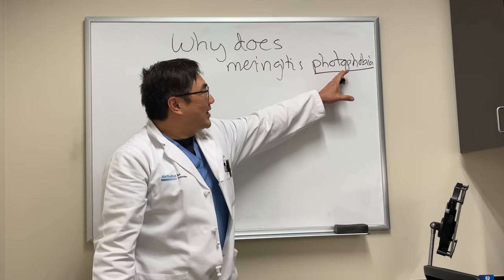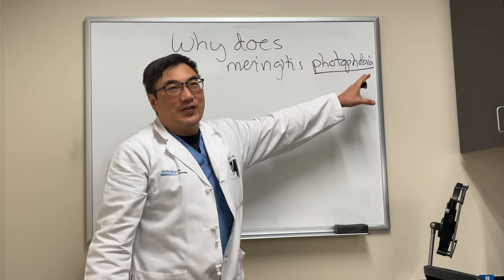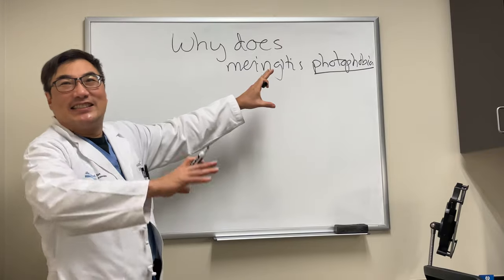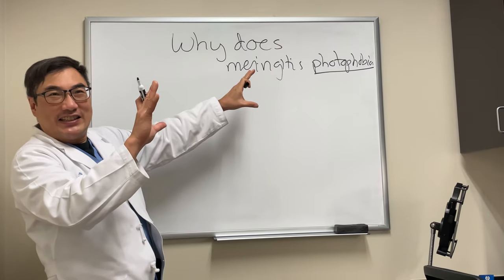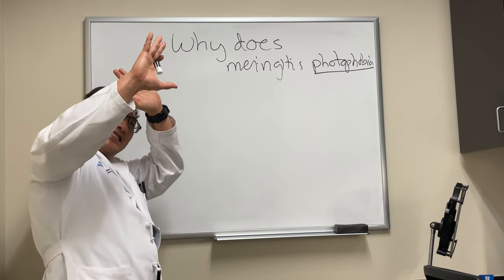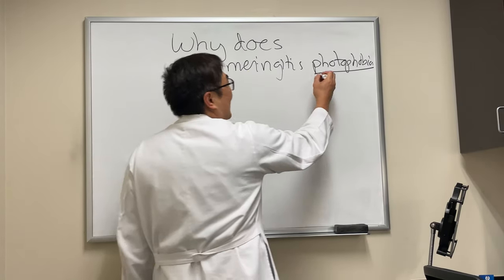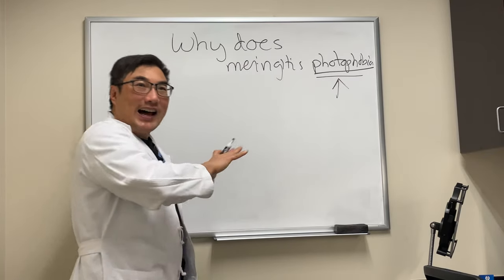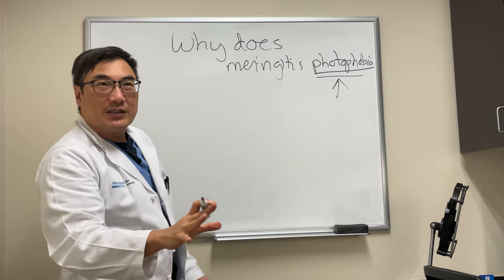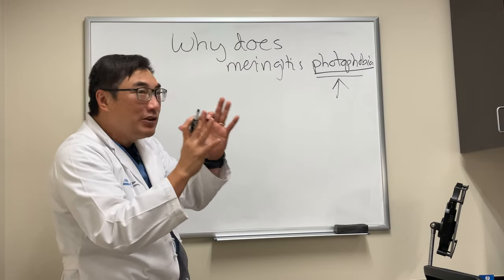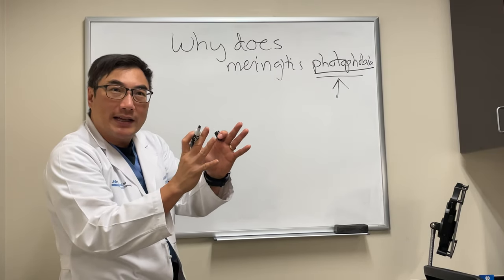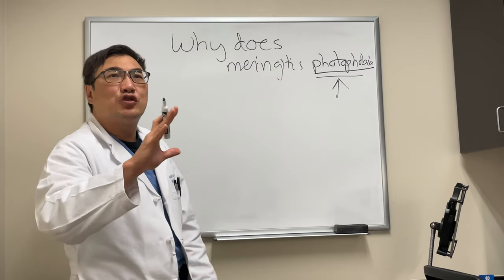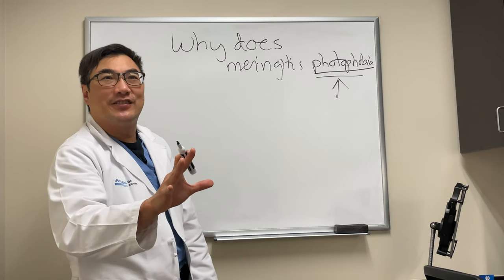Photo is light and phobia is fear. So it's not really sensitivity to light — they just don't want to see the light. This can be the result of a lot of different things, but the common unifying mechanism of all these photophobias is the trigeminal nerve.